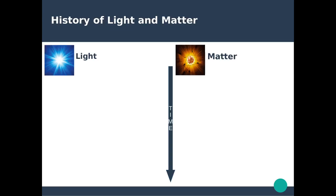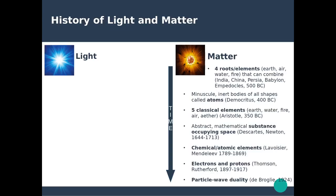Starting with matter, around 500 BC, all around the world — from India, China to Persia, Babylon and even Greece — the world was considered to be built from four elements. For Empedocles, the Greek philosopher who introduced these four roots, there was earth, air, water and fire, and these constituted the world around people.